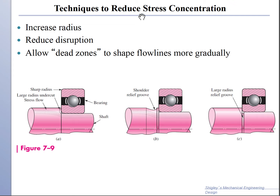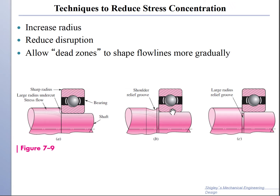In real design, the techniques to reduce the stress concentration for shafting in power transmission — where we have a small diameter shaft and a larger one — include several options. We can increase the shaft radius to reduce the stress, which means more material and more dollars. We can reduce the disruption, meaning ensure the ratio of the two diameters is not very large. We can also shape the dead zone between the small shaft and larger shaft to allow for a very smooth transition of the lines of force without excessive crowding — a generous shoulder relief groove very close to the bearings — which would reduce the stress concentration factor.